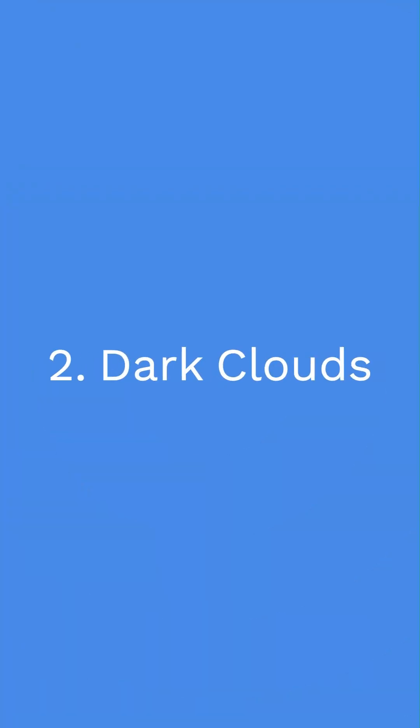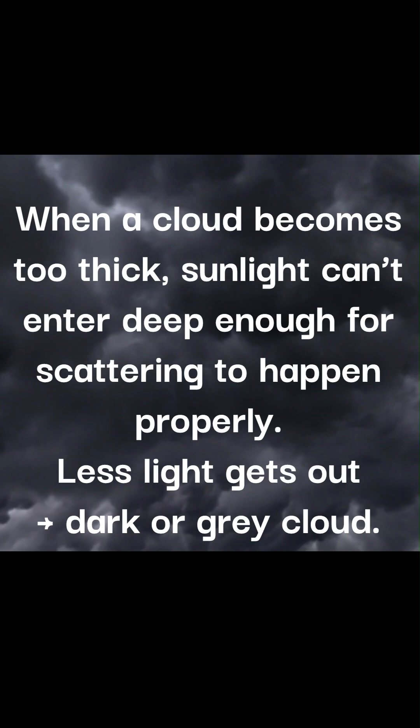Number 2: Dark Clouds. When a cloud becomes too thick, sunlight can't enter deep enough for scattering to happen properly. Less light gets out, resulting in a dark or gray cloud.